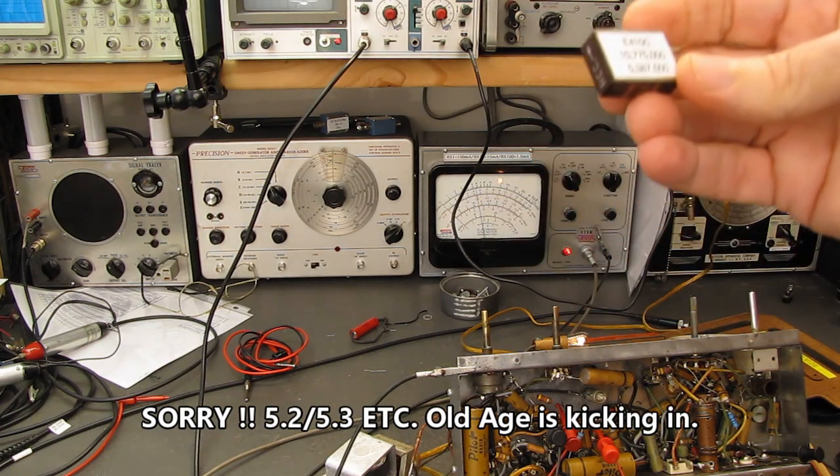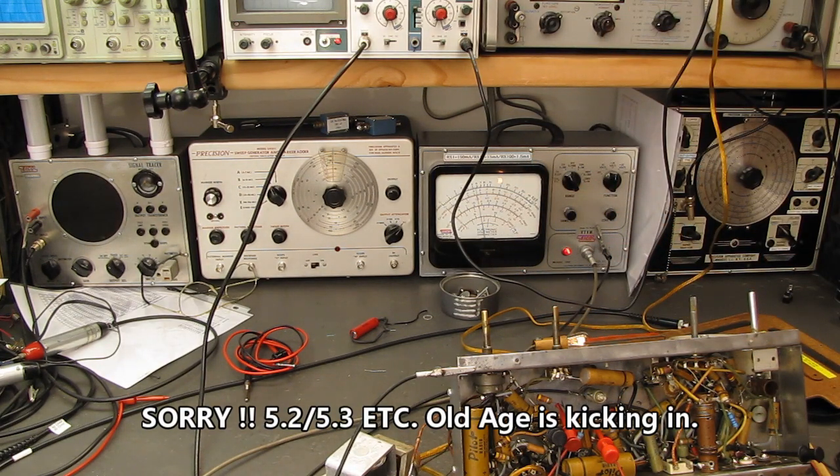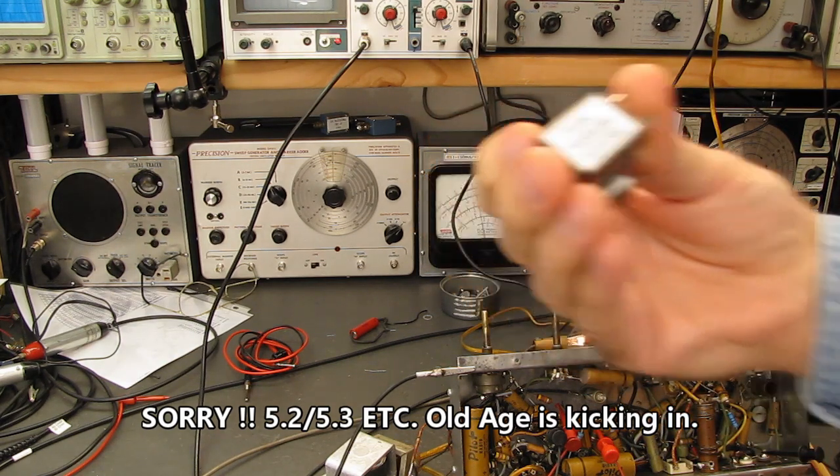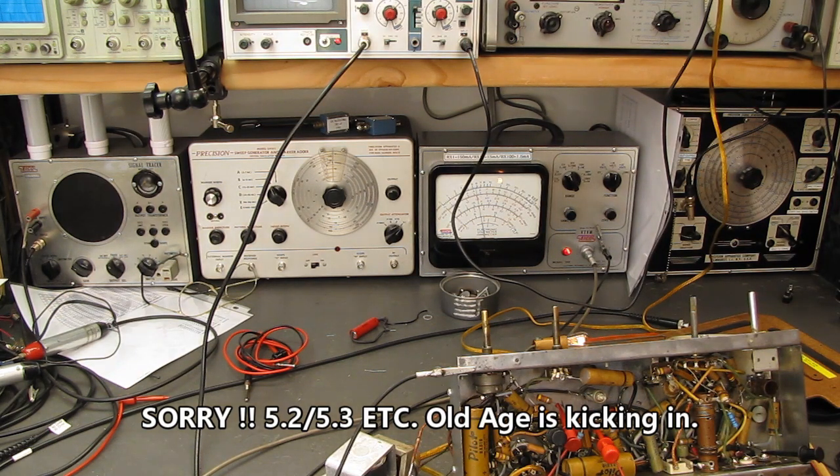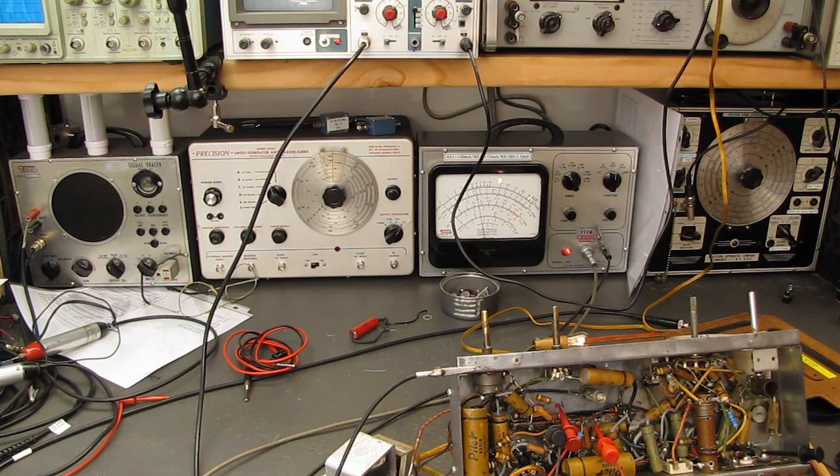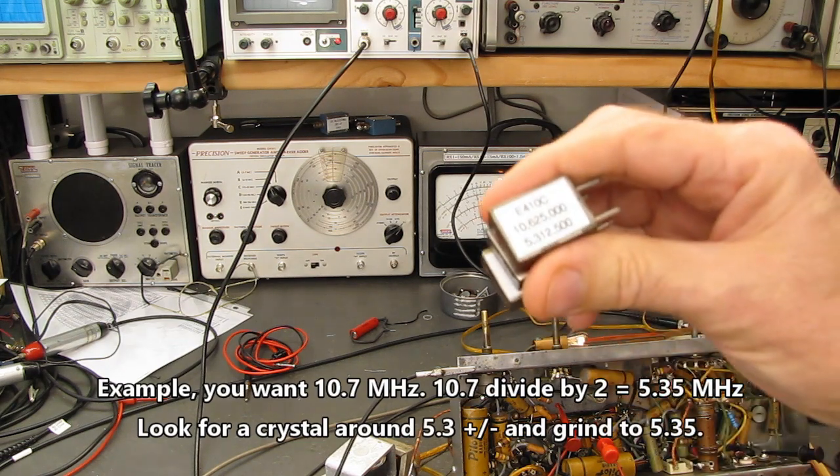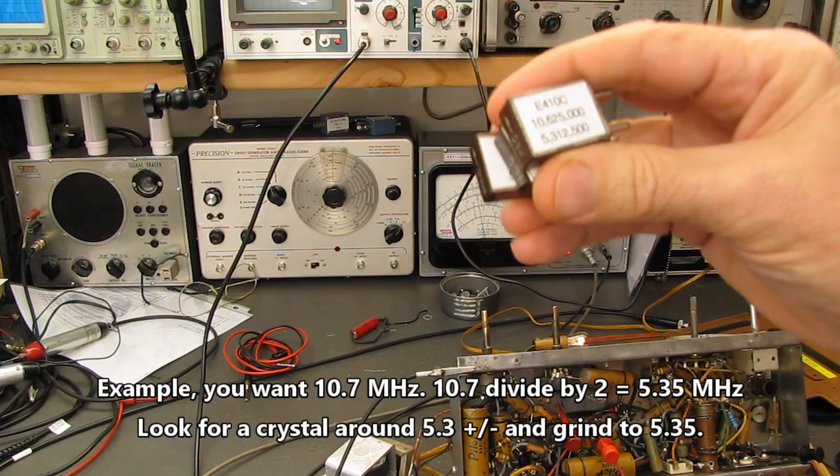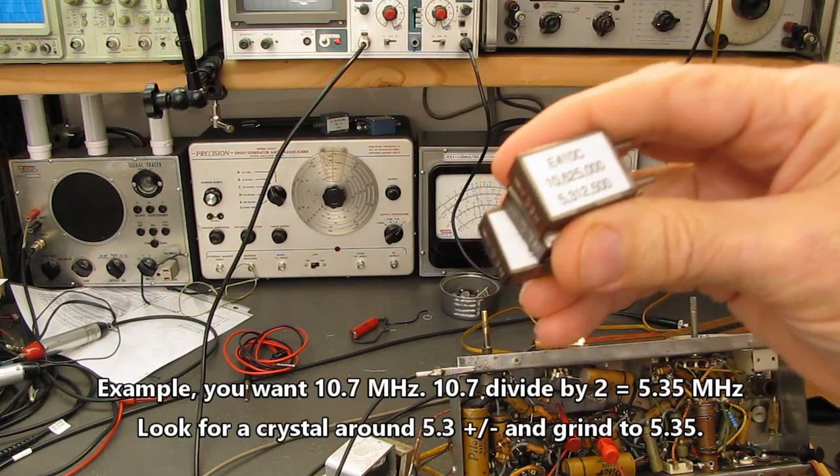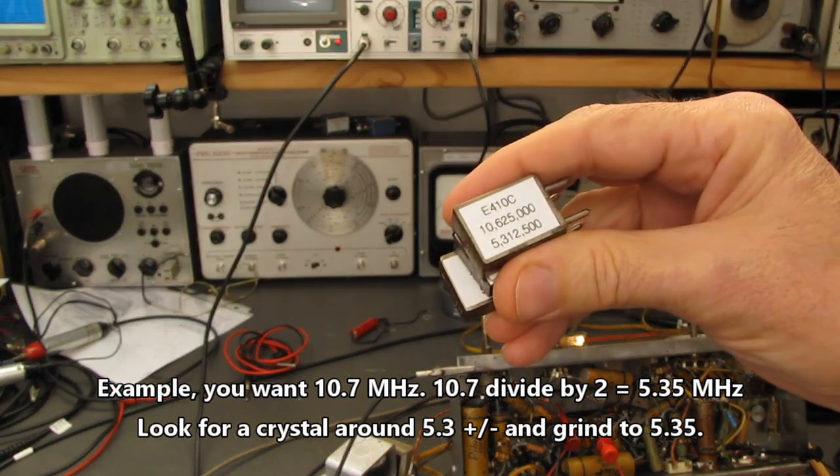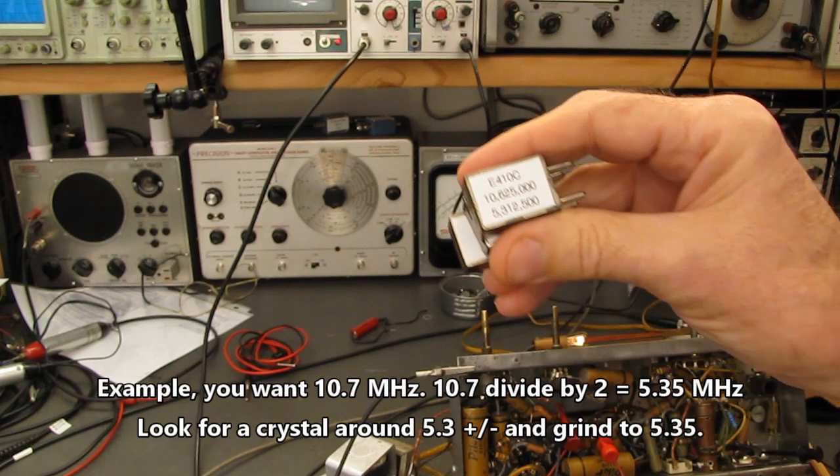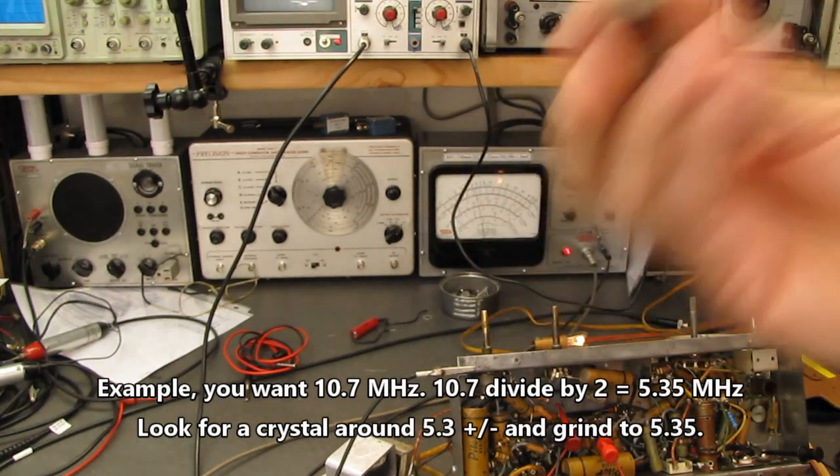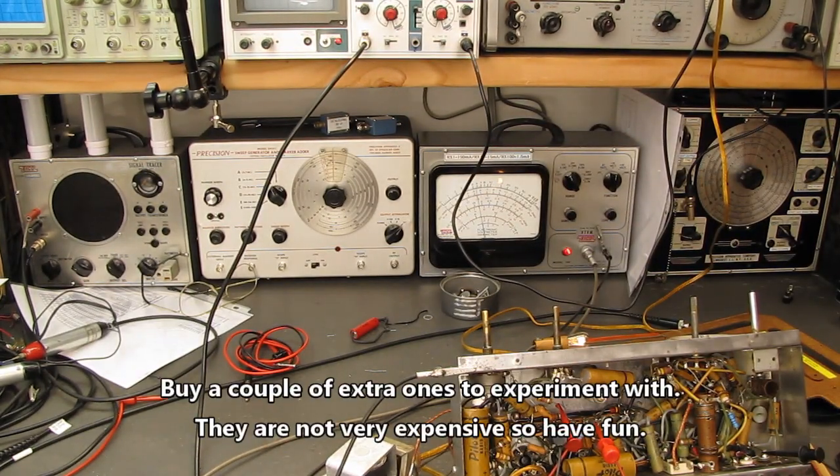These work very well on the second overtone with these precision marker adders. Trying to get crystals in the 10 megahertz region is tough, but finding them in the 5 megahertz or 4.5 or 4.8 megahertz, whatever is close to being half of the frequency you want, they're fairly common. There are many tutorials on YouTube about grinding crystals. It's not difficult, just takes a little bit of patience. You grind them on a piece of like 600 or 800 grit sandpaper on a piece of glass, clean them well, put them back in, test the frequency. If you overshoot, don't despair, you put a little pencil mark on the piece of quartz and it will lower the frequency back down a little bit.